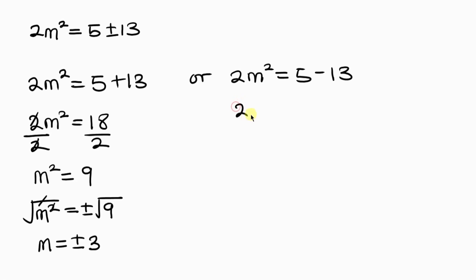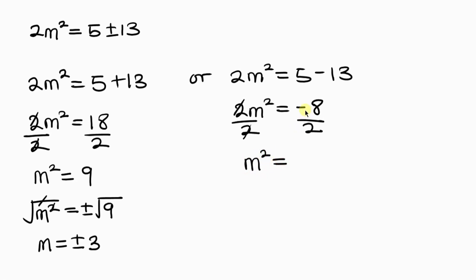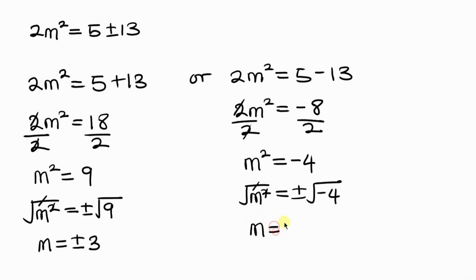For the minus case: 2m squared equals 5 minus 13, which is negative 8. Dividing both sides by 2, the 2s cancel, leaving m squared equal to negative 8 divided by 2, which is negative 4. Taking the square root of both sides gives plus or minus the square root of negative 4, which is 2i — a complex number.